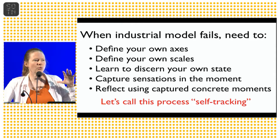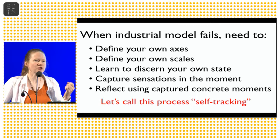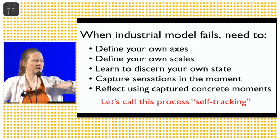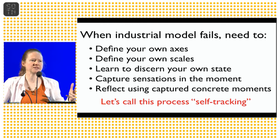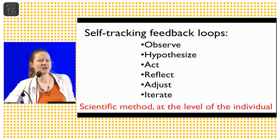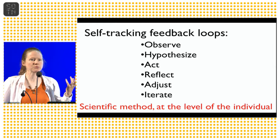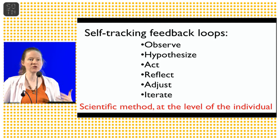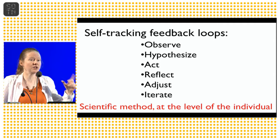However, what I have found in looking at all this is that when that industrial model fails, there are things you can do. You can define your own axes, you can define your own scales, you can discern how you're doing at a moment, you can record in the moment what's going on, and then you can reflect using those concrete instances and look at it through various lenses and say, does this match me? You can do this in a feedback loop. It's essentially the scientific process, but it's not applied to generalizable knowledge. It's applied to very specific knowledge. If I believe this and I do this, what's it do in my life? Does it do it for me or not?